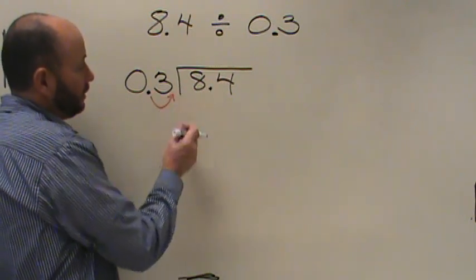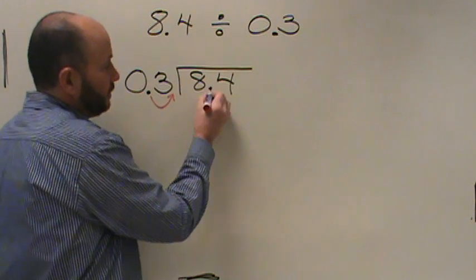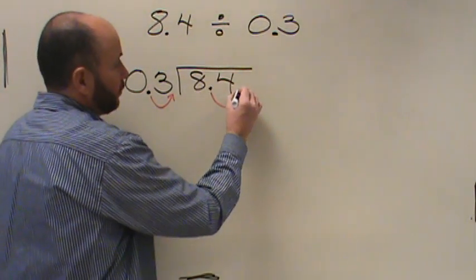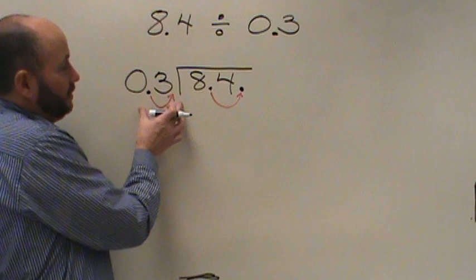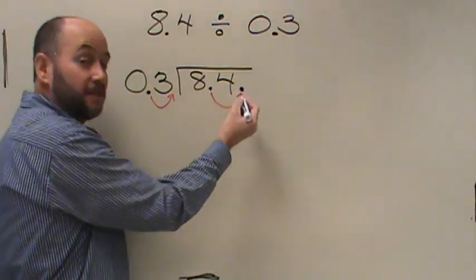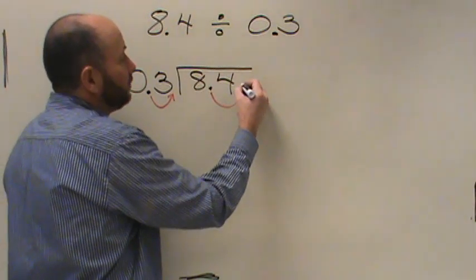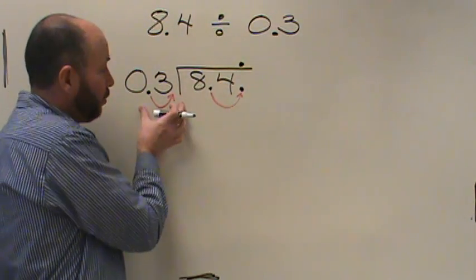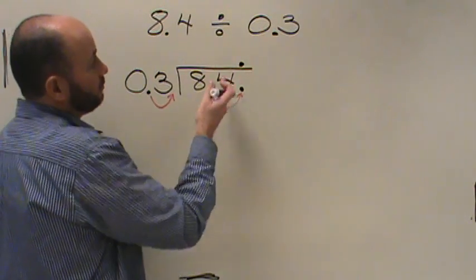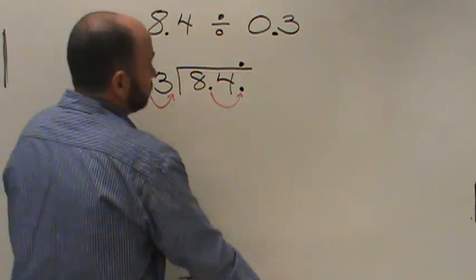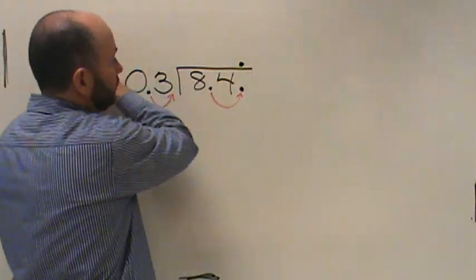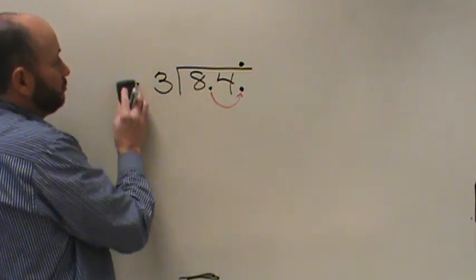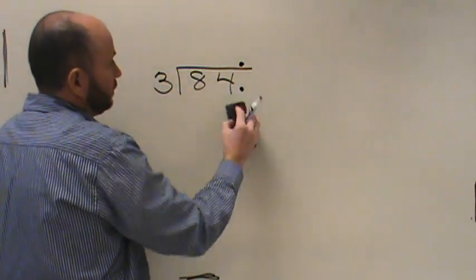You will do that by taking your divisor and moving the decimal point over as far to the right as you can — one spot. Then you take the decimal point in your dividend and move it over the same number of places. That creates a new number you're working with. Your decimal point is now placed correctly, and you take it up and put it in your quotient. Once you've moved your decimal points appropriately, you can begin doing your division like you normally would.